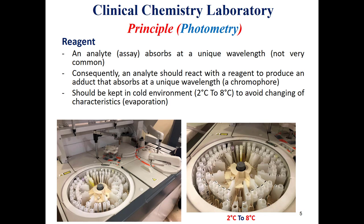This reagent — as we can see in this photo of the AU400 analyzer — comes in two types: reagent 1 and reagent 2. This reagent should be stored in the analyzer at a specific temperature ranging between 2 to 8 degrees. We should have a refrigerator in the analyzer to avoid changing the characteristics of the reagent and to increase their stability on board, which means inside the analyzer. This refrigeration is to avoid evaporation, so we need to store these reagents at 2 to 8 degrees to avoid evaporation and changes in reagent characteristics, which could lead to inaccuracy in the analyzer readings.